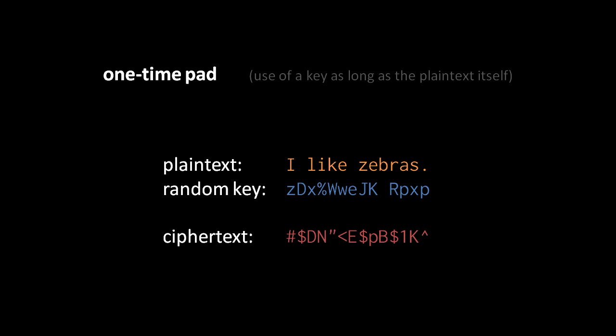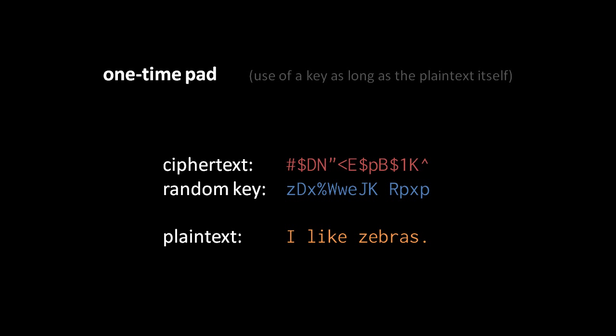So for example addition is a good candidate because we can add a character of the plaintext to a character of the random key and get out a character of ciphertext, and then to reverse that we use subtraction. We subtract a character of the random key with the corresponding character from the ciphertext and we get back the corresponding character of plaintext.